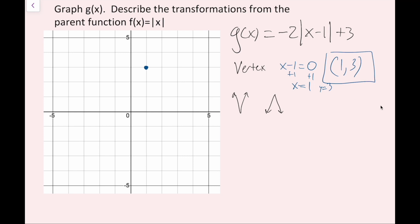The next thing I'm going to do is figure out if it's V-shaped or upside-down V-shaped. The way I do that is simple: I just check if there's a negative sign on the outside of my absolute value expression. There is one here, so that means it's going to be an upside-down V, pointing down rather than opening up.